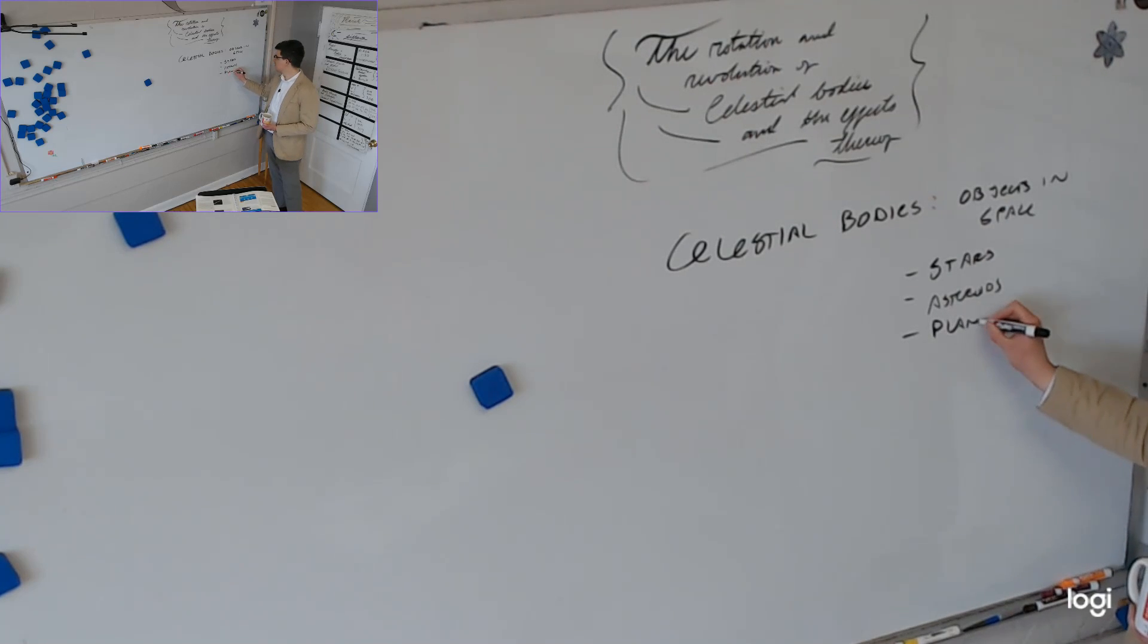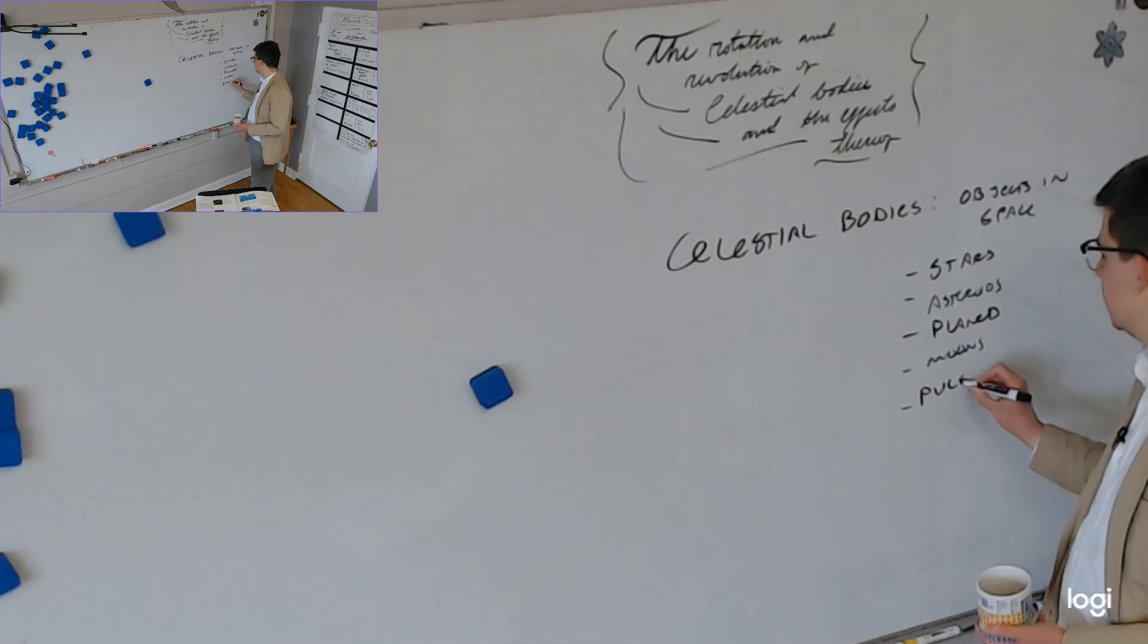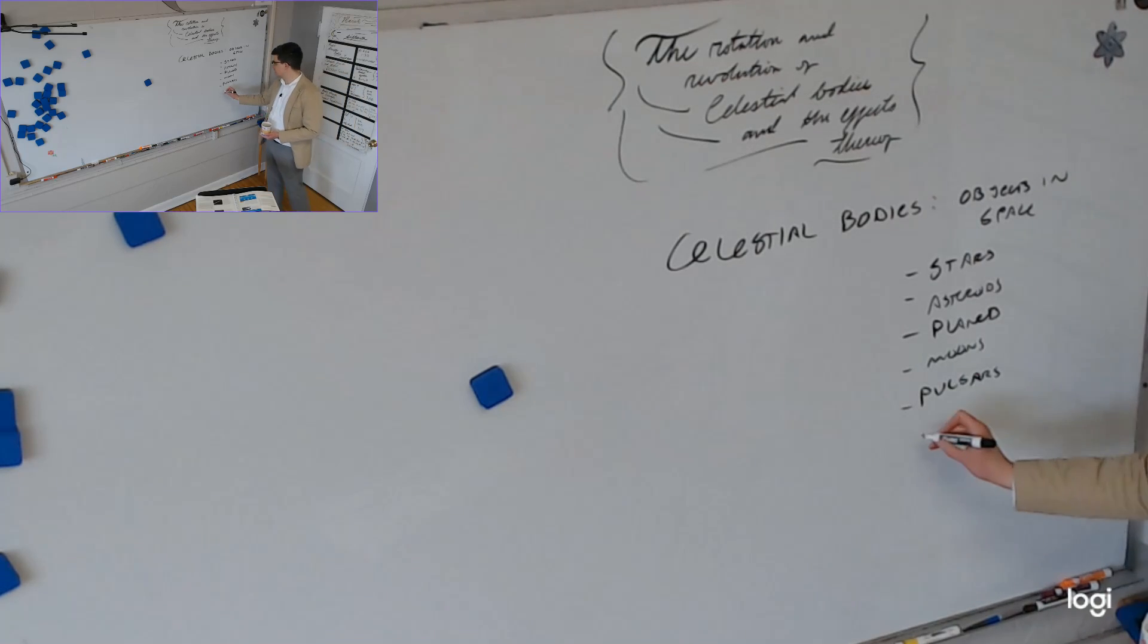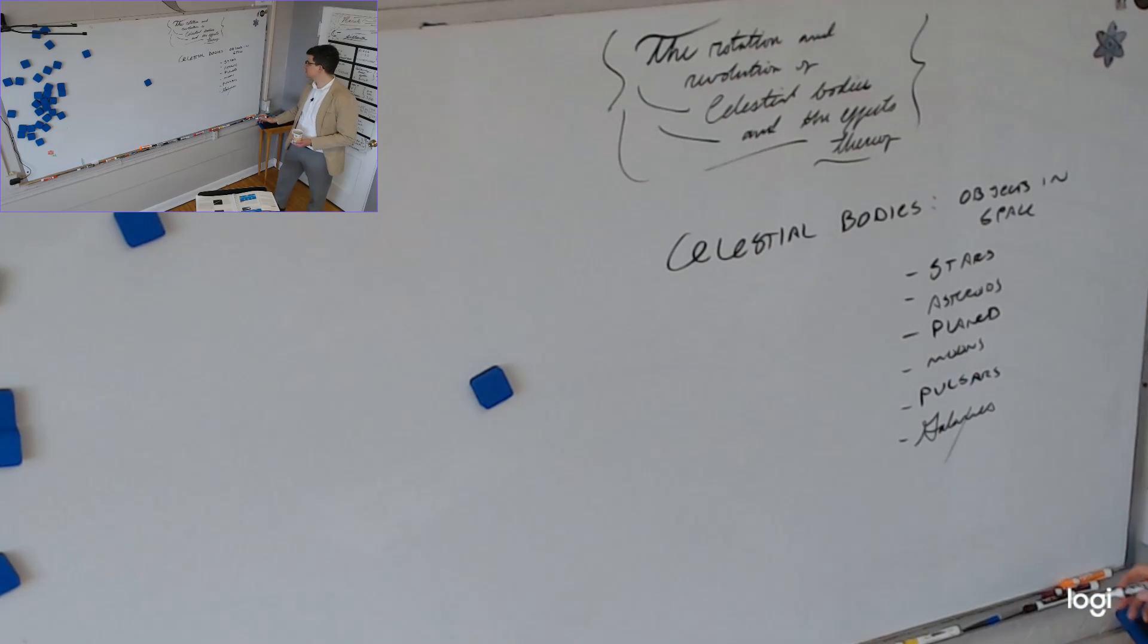Planets. Moons. Yeah, well, things like, we can include things like galaxies and black holes. Pulsars, which are actually a type of star too. Yeah, there's all celestial bodies. Milky Way, galaxies. All of these are celestial bodies. They're just things in space.